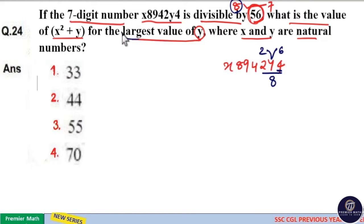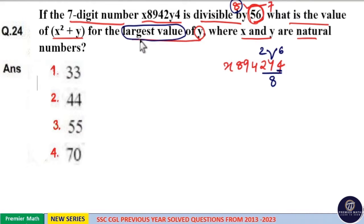But the question says y should be the largest possible value. So y is 6 here. From this, y is equal to 6.